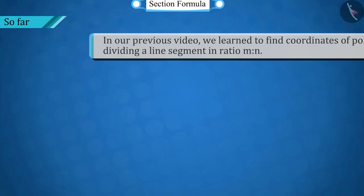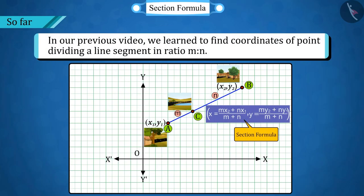Welcome to this video. In our previous video, we learned to find the coordinates of point C internally dividing the line AB connecting two points A and B in m:n ratio, called the section formula.